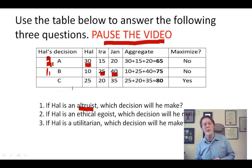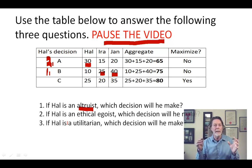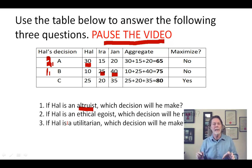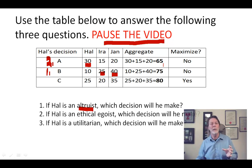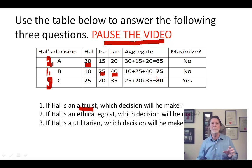You can guess which is left over. But if Hal's a utilitarian, what he has to do is look at the aggregate — not any individual people, but the aggregate of everybody's happiness. He looks in the total column to see which of these numbers is highest. Decision C produces the maximum amount of happiness. That's the utilitarian viewpoint. If he's a utilitarian, he chooses C — number three — because the aggregate is the highest.